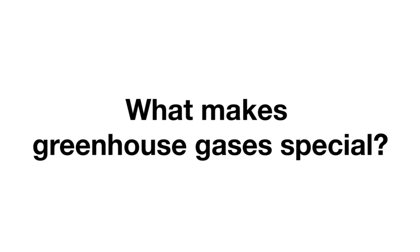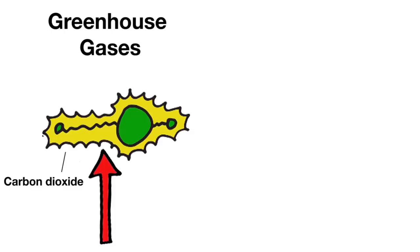In case you're wondering about what makes greenhouse gases special, here are two sentences of slightly technical information. Greenhouse gases, such as carbon dioxide, absorb infrared light because their molecules can vibrate to produce asymmetric distributions of electric charge, which match the energy levels of various infrared wavelengths.